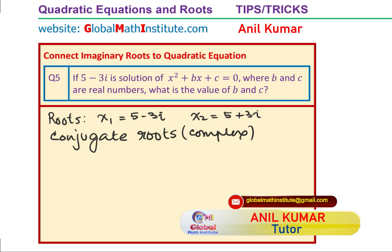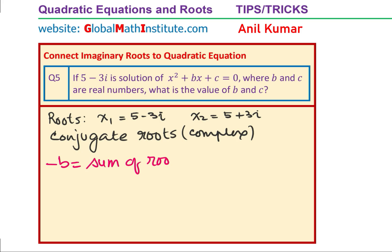Now, we know that minus b is equal to sum of roots. Just add them up: 5 minus 3i plus 5 plus 3i. What do you get? While 3i minus 3i cancel, you get 10. And therefore, we can conclude that b is equal to minus 10. See how simple it is.